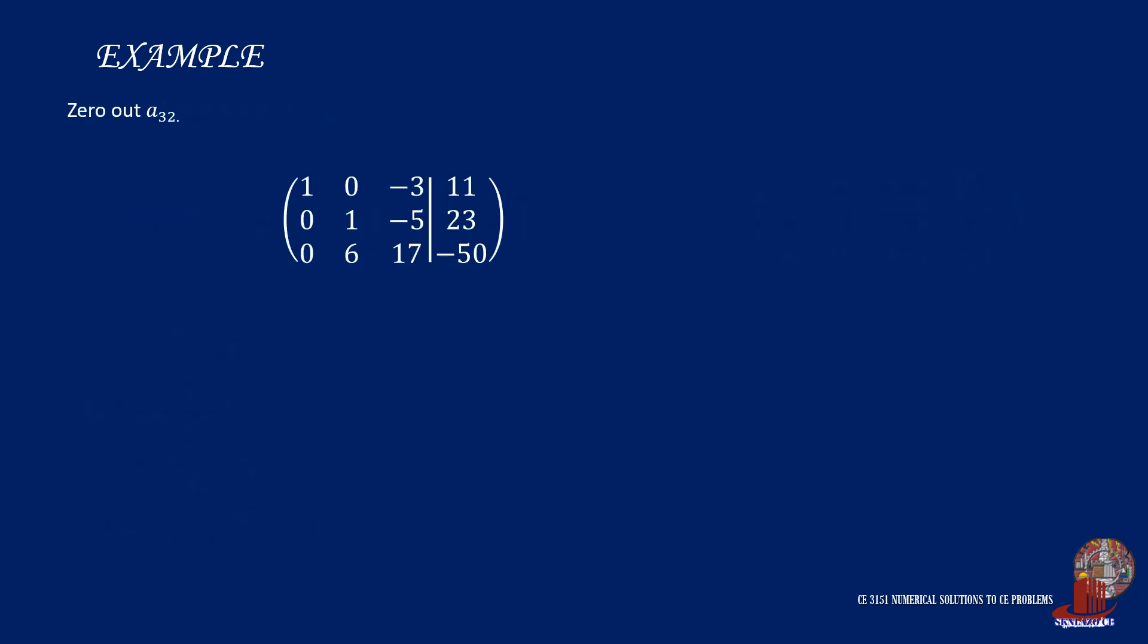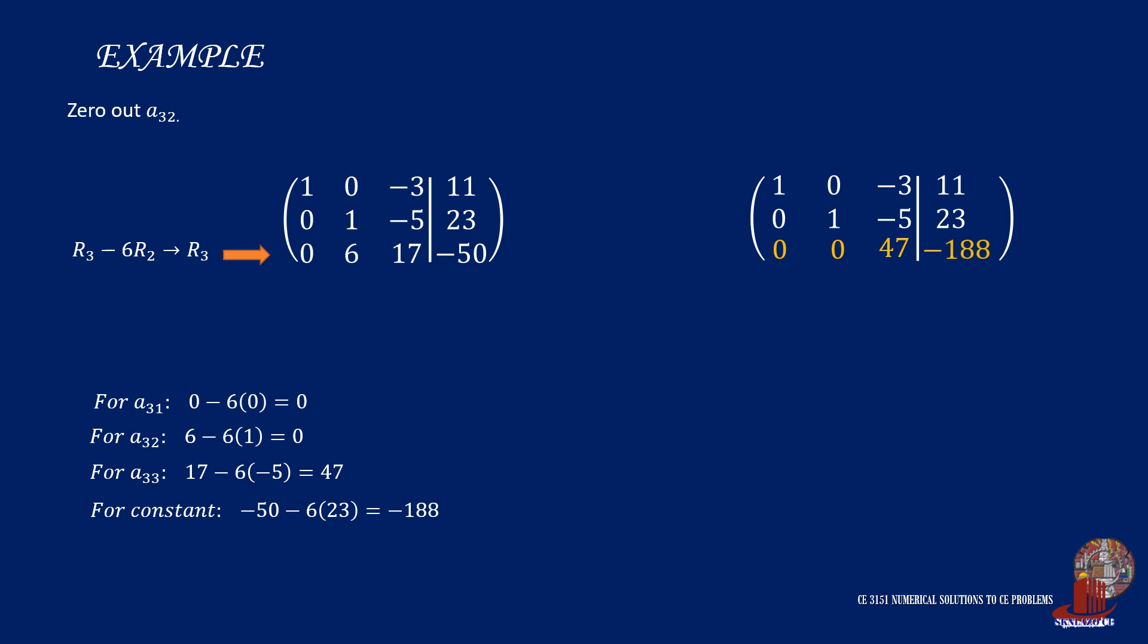Now zero out the remaining elements in column 2, as we have only element 3,2. We can do this by taking row 3 minus 6 times row 2 for our new row 3. So for element 3,1, we have 0 less 6 times 0, giving 0. For element 3,2, we have 6, then we subtract 6 times 1 to end up to 0. Then at element 3,3, we have 17, then subtract 6 times negative 5 to have 47. And lastly, for the constant element, we have negative 50, where we subtract 6 times 23 to get negative 188.